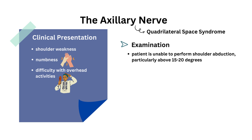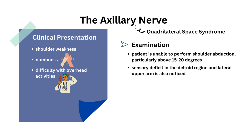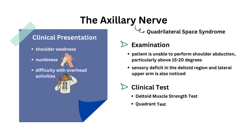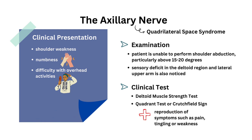A sensory deficit in the deltoid region and lateral upper arm is also noticed. Clinical tests include the deltoid muscle strength test and the quadrant test, or Crutchfield sign. A positive test is indicated by reproduction of symptoms such as pain, tingling, or weakness along the distribution of the axillary nerve, particularly in the deltoid muscle and lateral aspect of the shoulder.